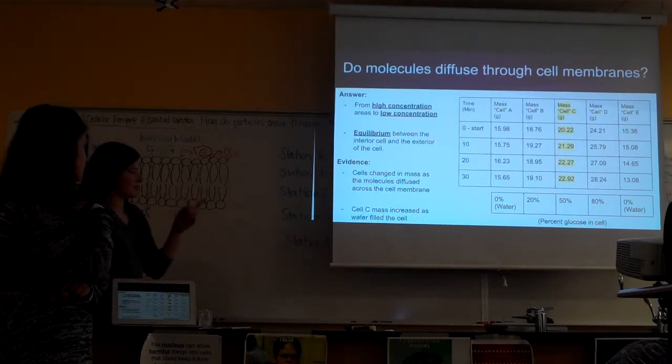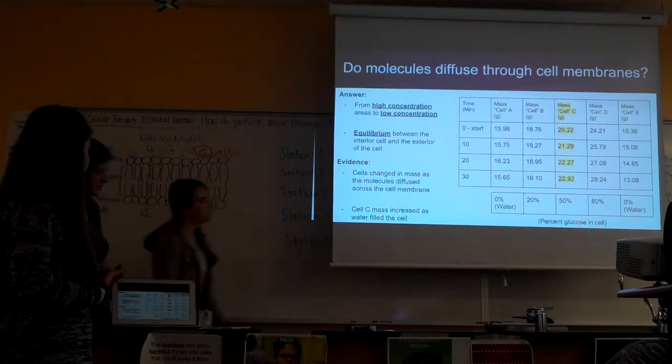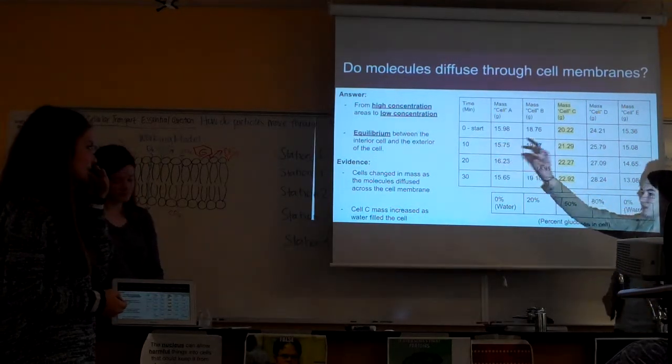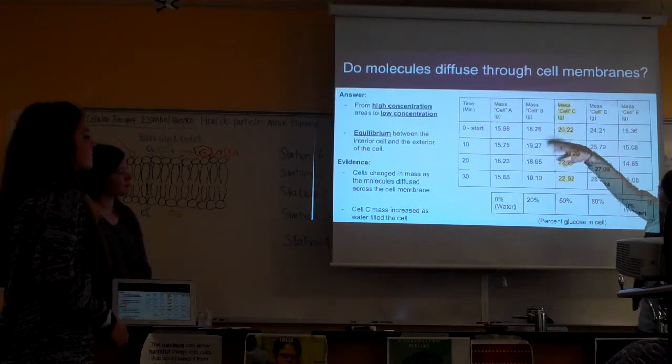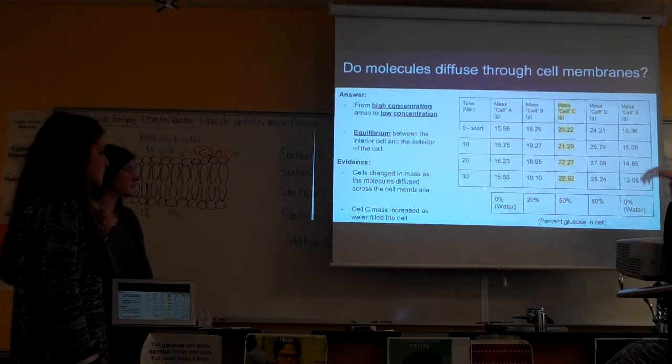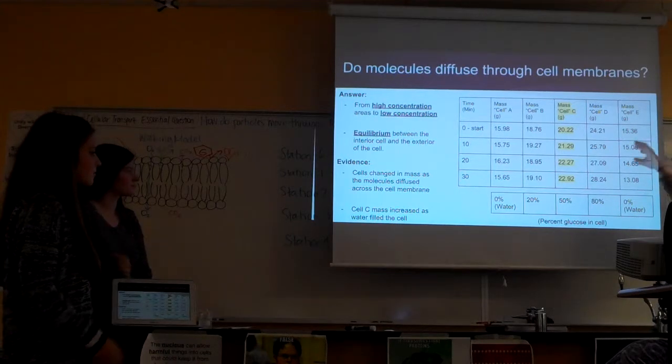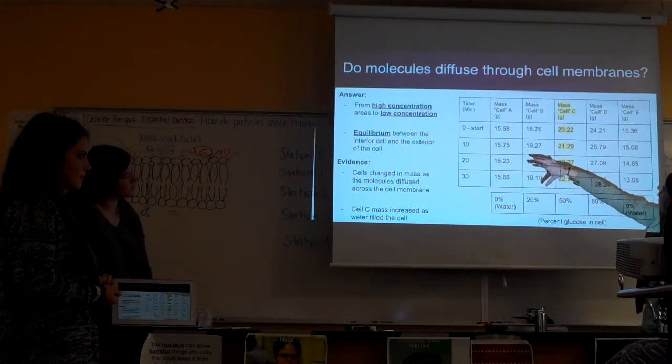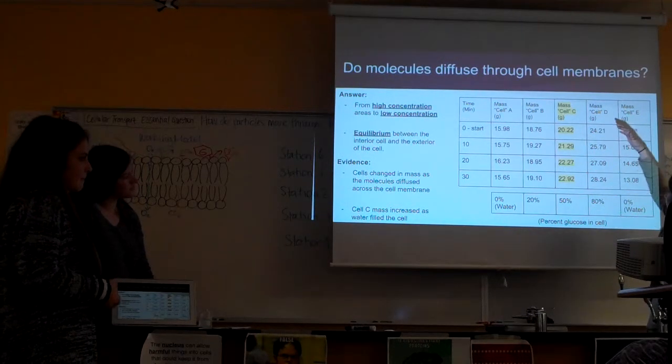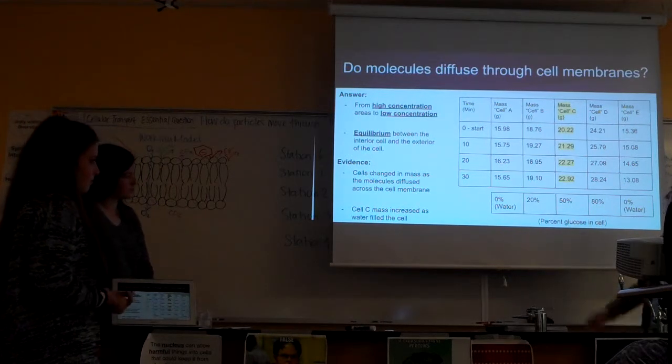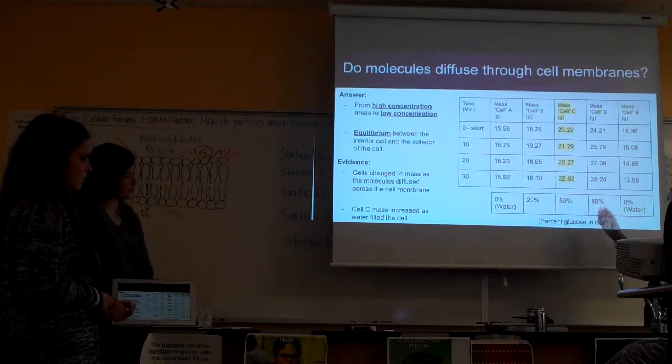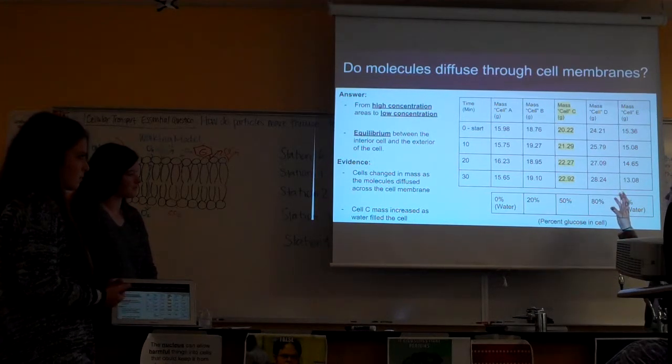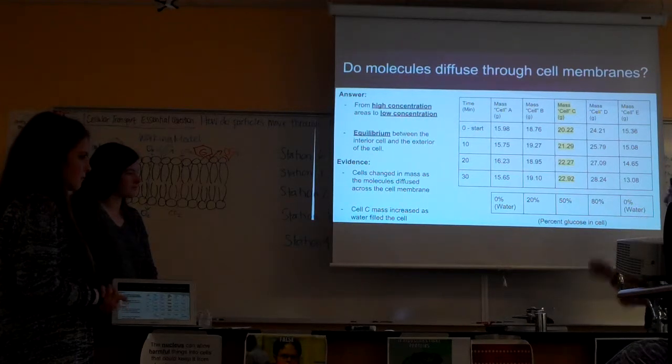Our evidence was in the mass change. In most of these cells, this was just water on the inside and water on the outside. In cells B, C, D, and E you can see the masses changing. This one decreased as water exited the cell and went to an area of high concentration with glucose in it. Cells B, C, and D all increased as water went into the cell because they had a higher concentration of glucose and lower concentration of water.